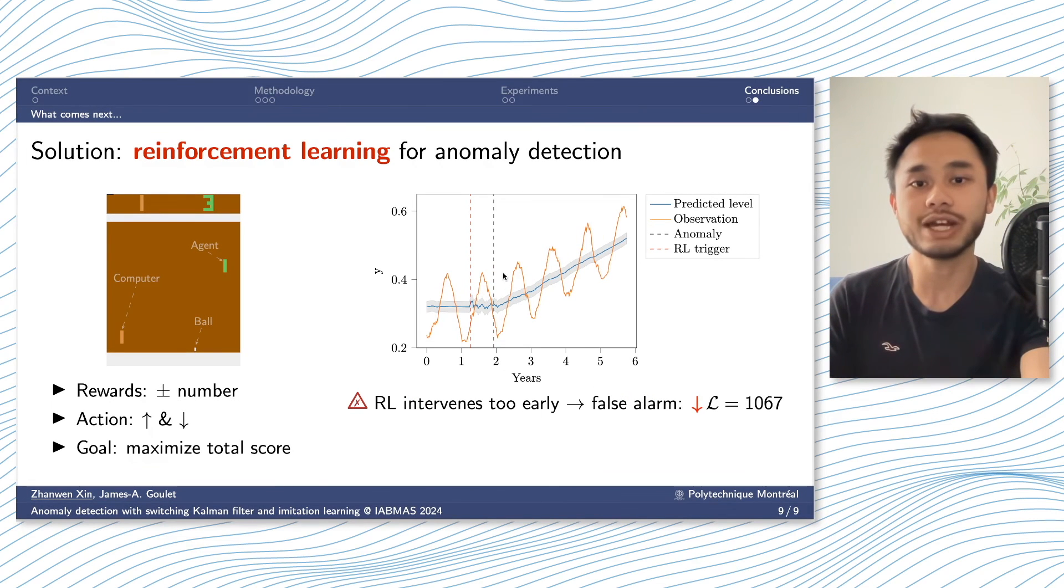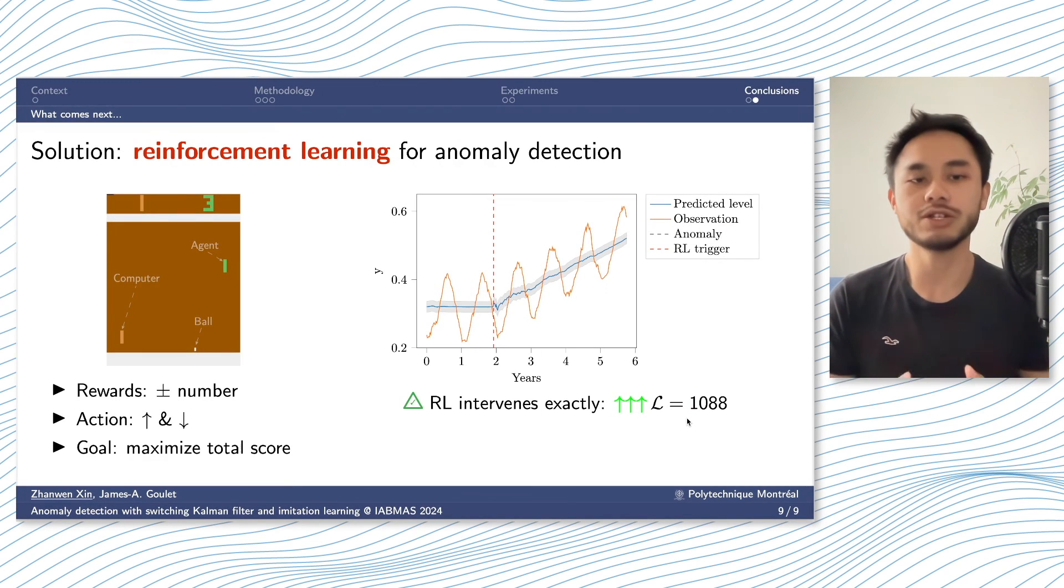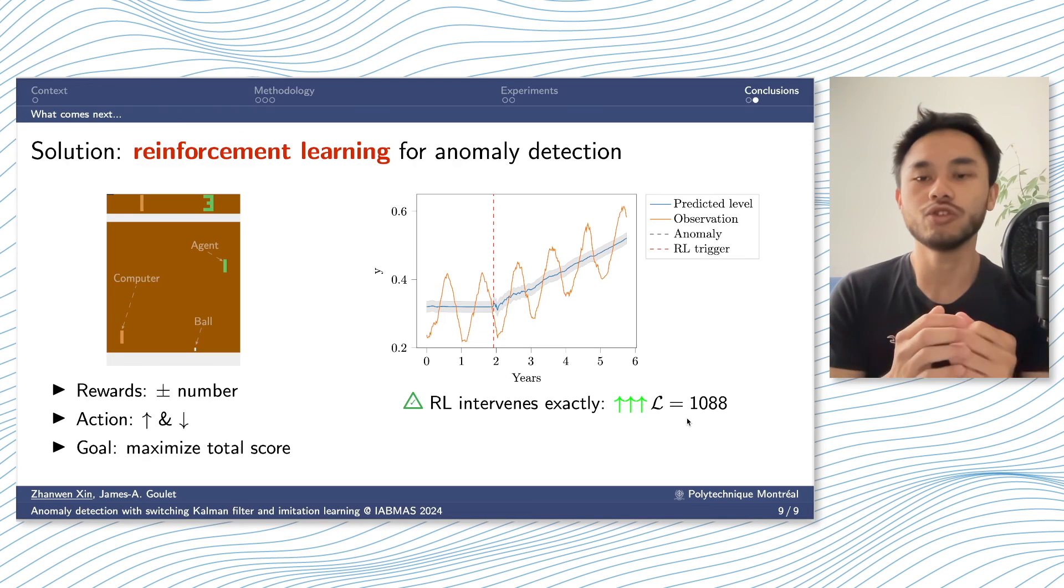On the other hand, if you trigger an alarm too early and provide a false alarm, the likelihood would drop again. So by doing so, we can encourage, we can use the likelihood to give the agent reward or punishment so as to encourage it to do the right action at the right time to trigger better alarms for structural health monitoring.